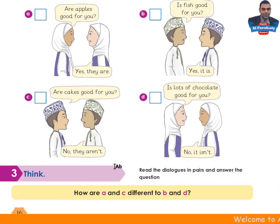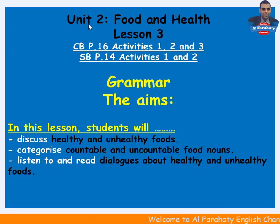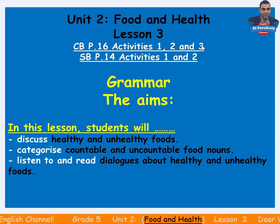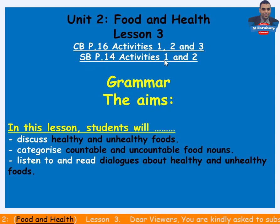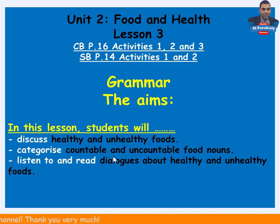What are the aims of this lesson? Let's check. Unit 3, Food and Health, Lesson 3. Classbook page 16, Activities 1, 2 and 3. Skillsbook page 14, Activities 1 and 2 — Grammar. The aims: in this lesson, students will discuss healthy and unhealthy foods, categorize countable and uncountable food nouns, and listen to and read dialogues about healthy and unhealthy foods.